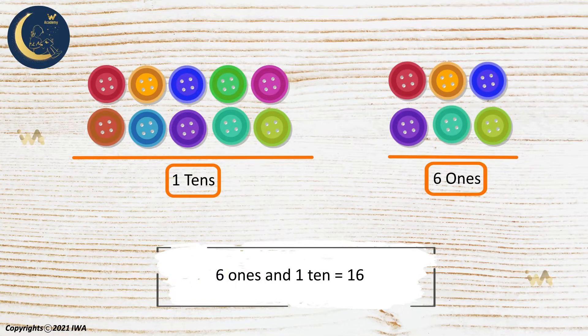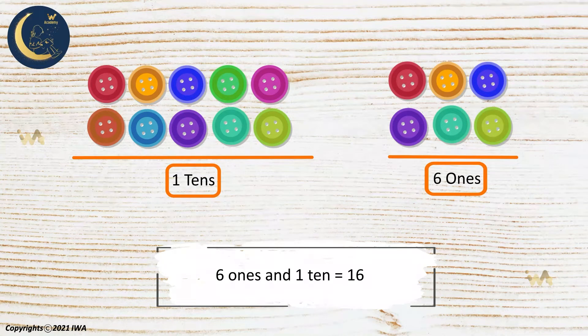So we have 6 ones and 1 ten. This number is 16. We first write the ones, then the tens.